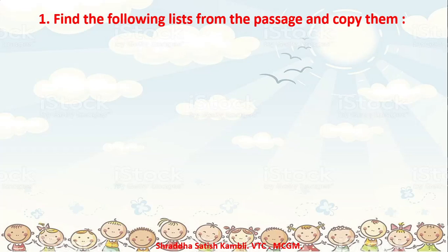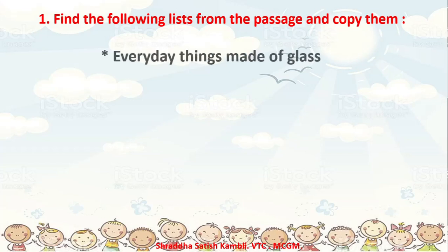When will you be able to find out the list of words? When you read the passage properly. I would suggest keeping your textbook open and reading the passage once, twice, thrice until you get to know what is written there, and then come back and try to solve the first question. In the passage, what are the names of the everyday things which are made up of glass? I will give you some answers and leave you to find the others. Let me give you the names of some articles made up of glass according to the passage.